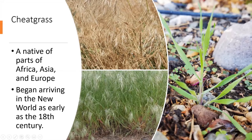After a while, the cheatgrass will dry out and become very susceptible to fire. As mentioned previously, cheatgrass is native to parts of Africa, Asia, and Europe, and it began arriving in the new world as early as the 18th century, so it's been here for a long time.